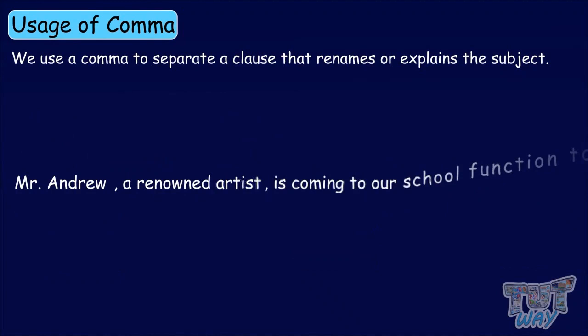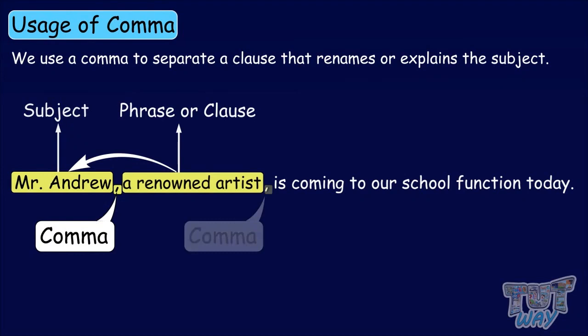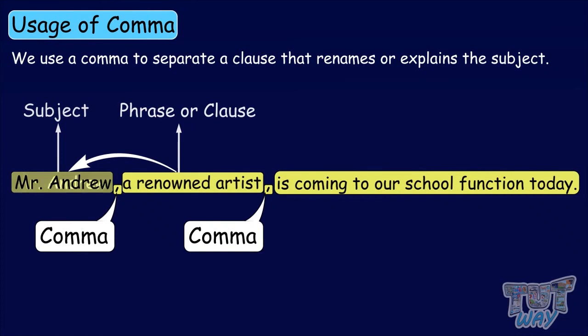Another example: Mr. Andrew, a renowned artist, is coming to our school function today. Here, Mr. Andrew is the subject of the sentence and is being separated by a comma. The phrase explaining the subject, a renowned artist, is again separated by a comma. So, we separate a phrase or a clause that explains the subject by using commas.